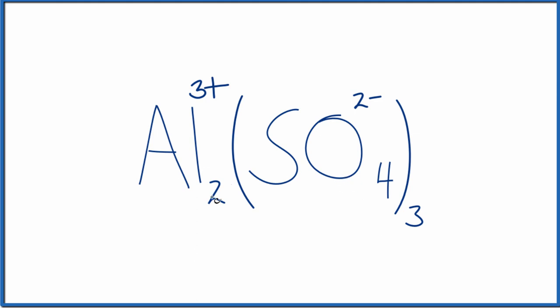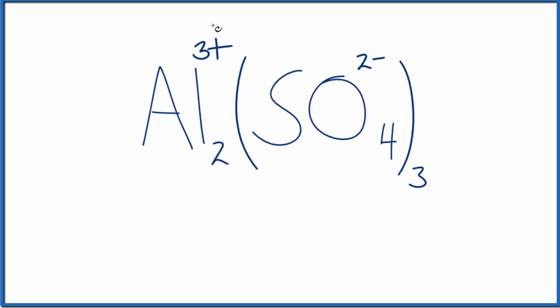To find the number of ions, we have two of these aluminum ions. So two of the Al³⁺ ions, and then three of our sulfate ions. So 3SO₄²⁻, the sulfate ions.